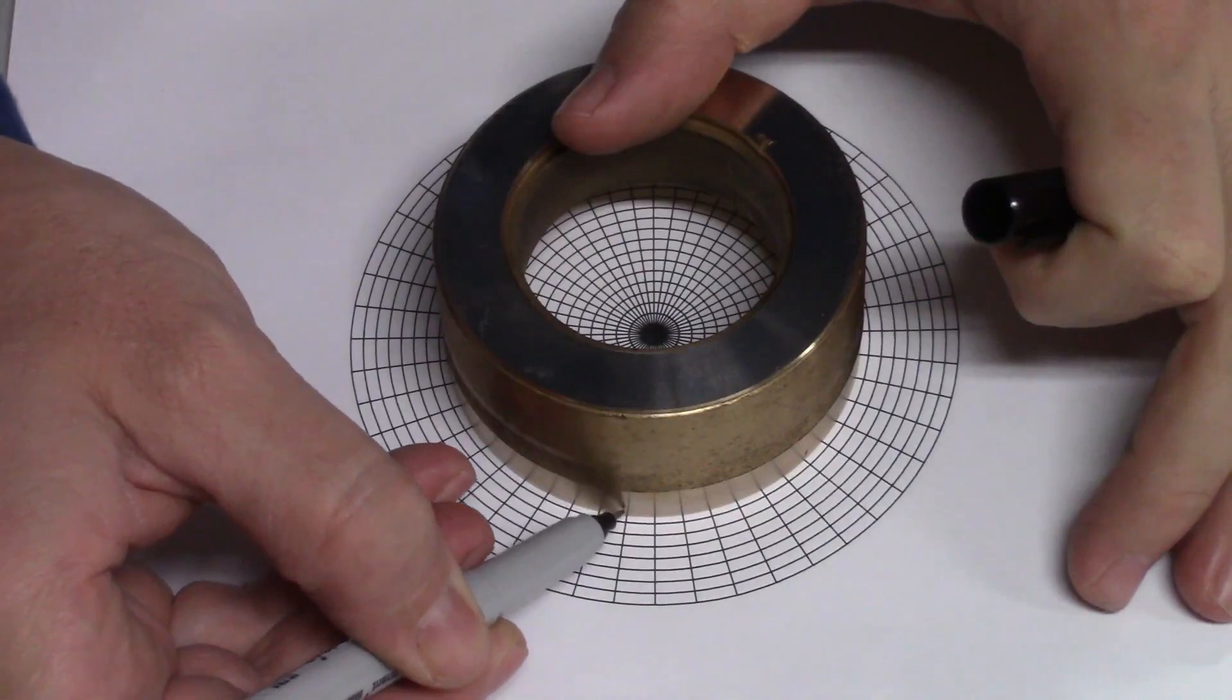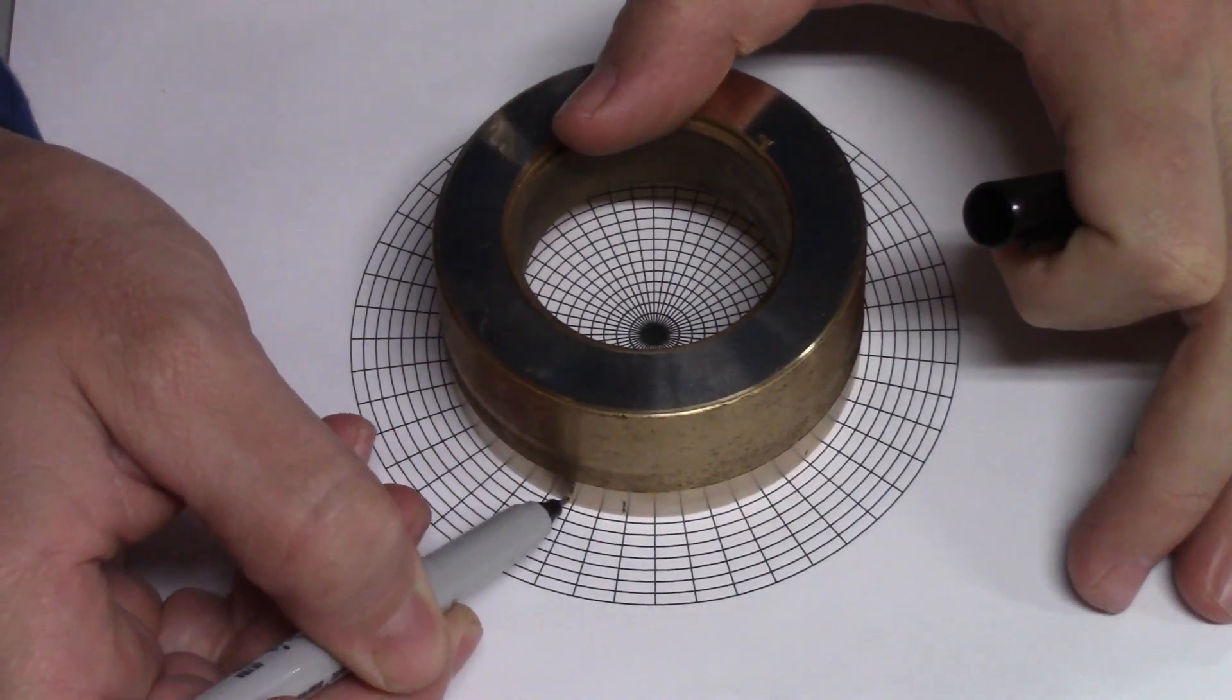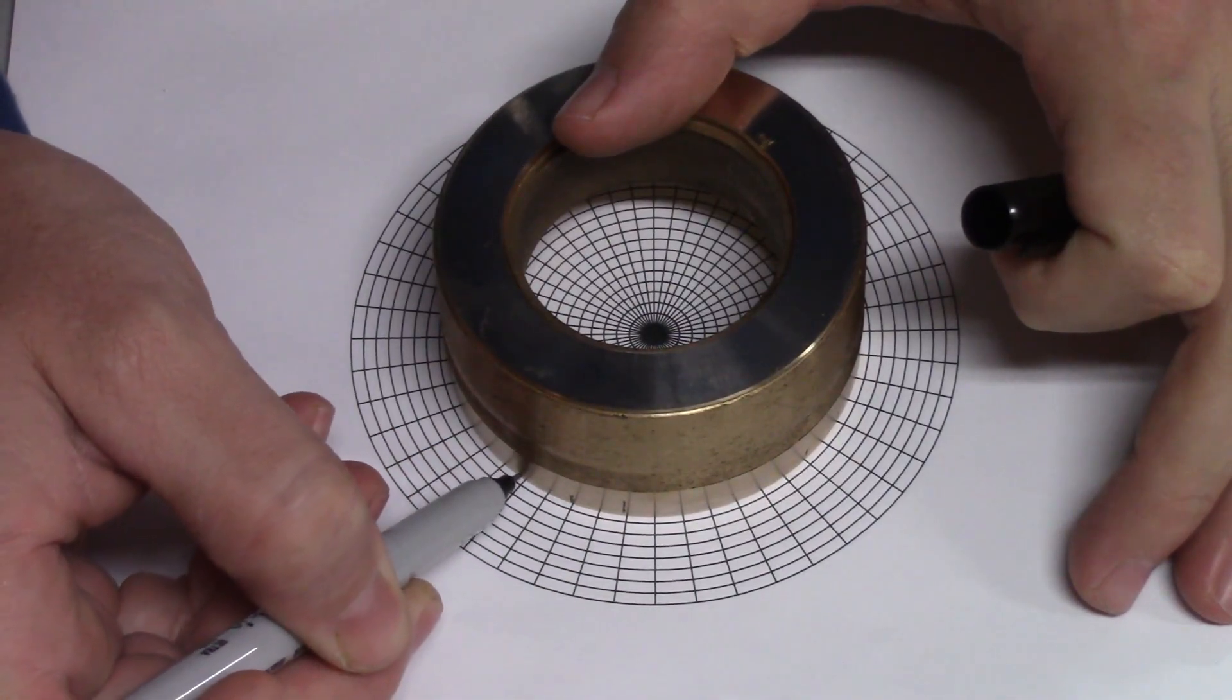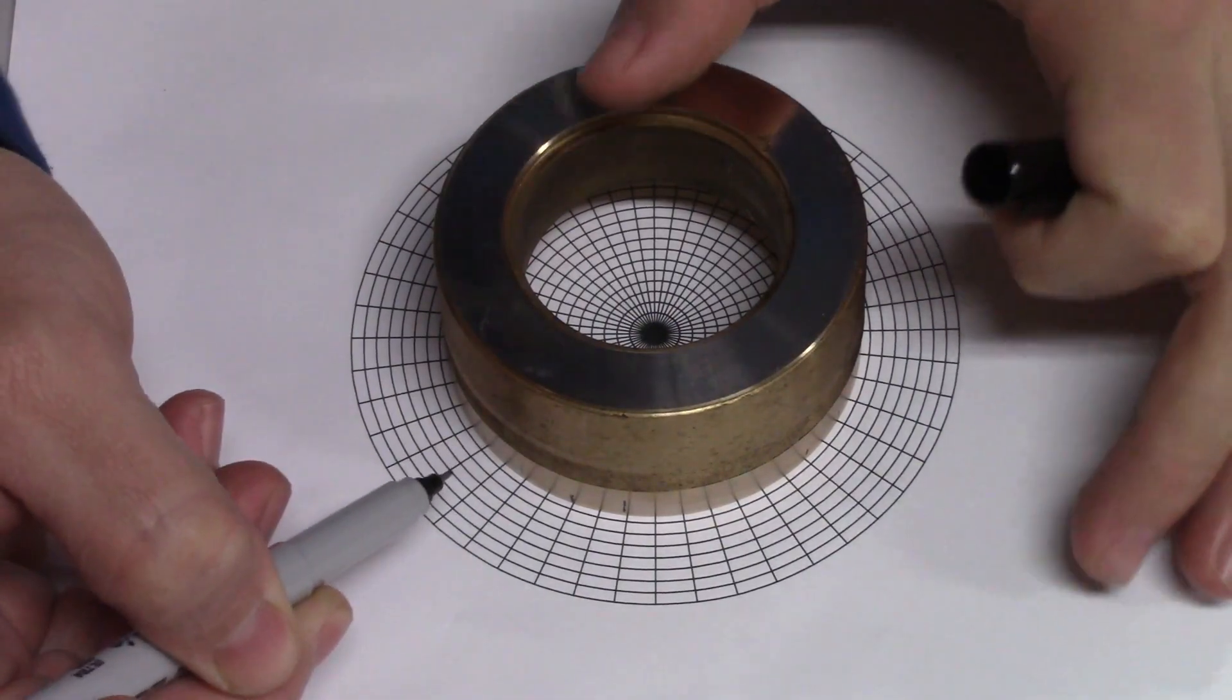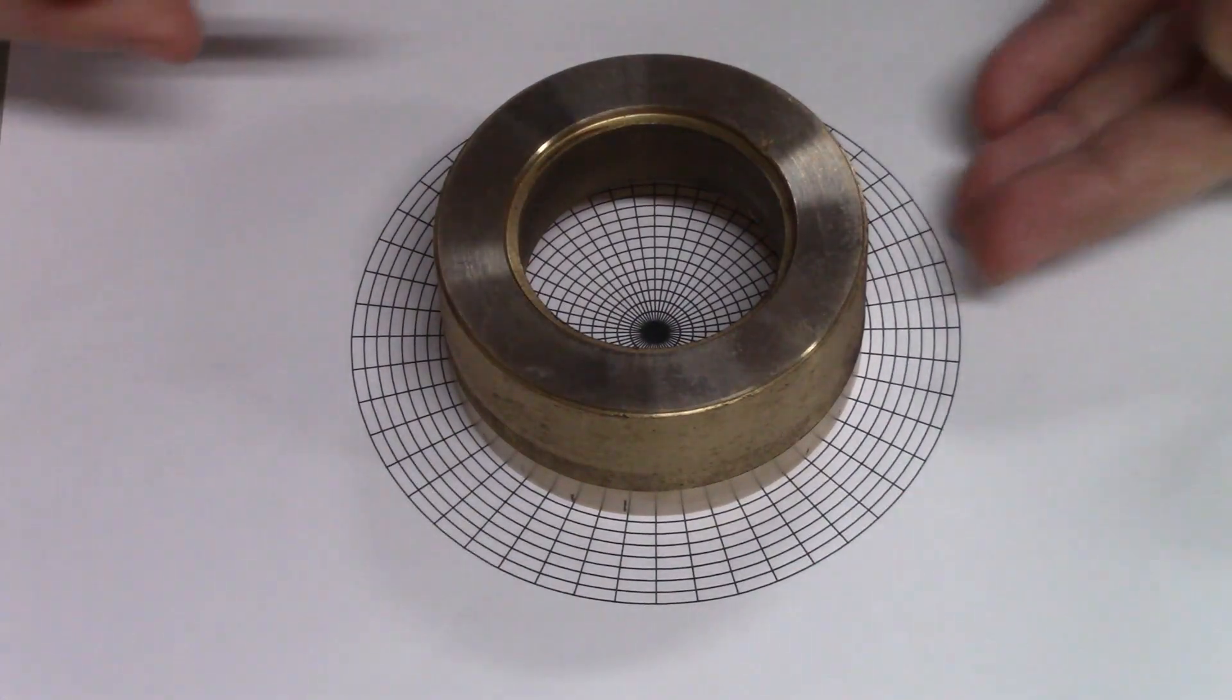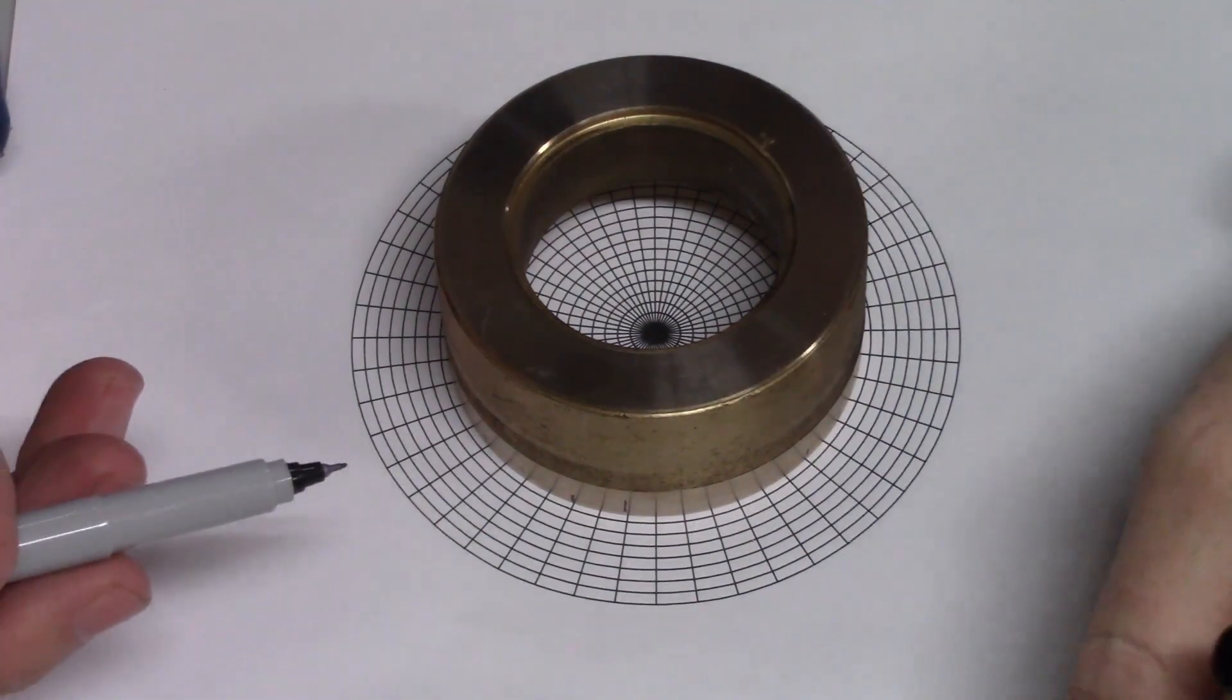Now all I need to do is put a mark at the lines where I want to have my slots. So I'm going to go with every second line on here. I think that's going to be more than enough, and I'll just go all the way around the piece and then I can make my slots.